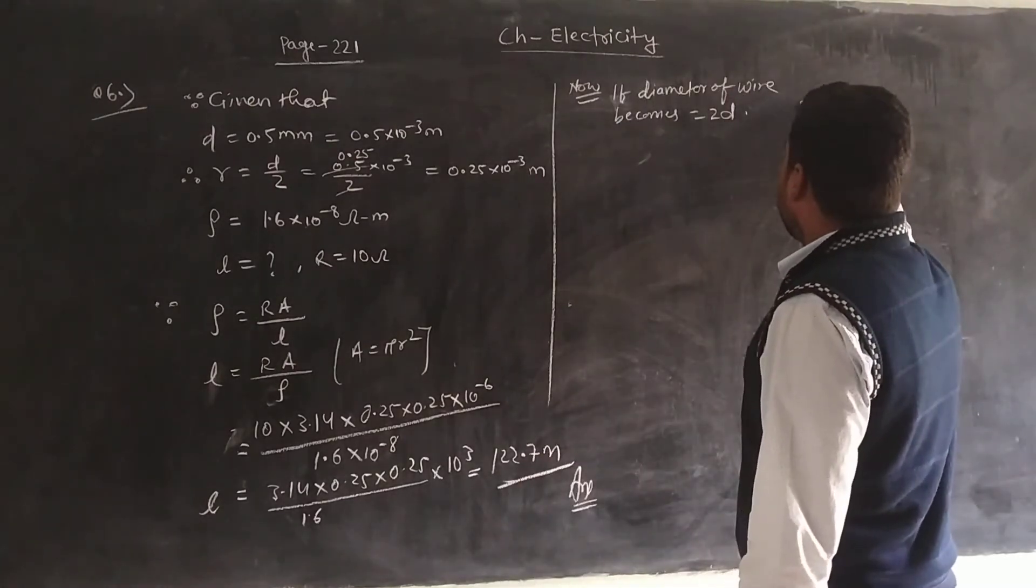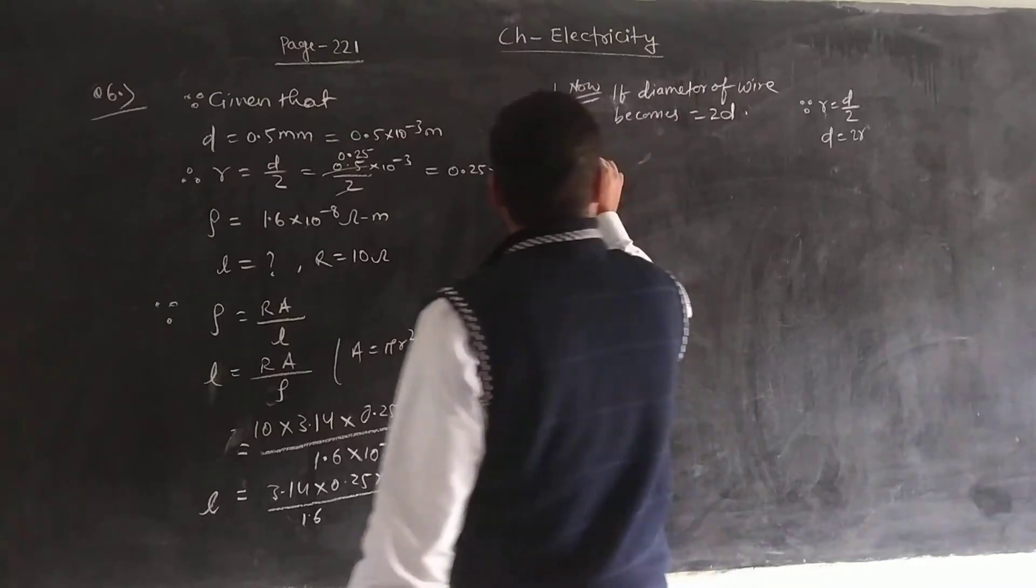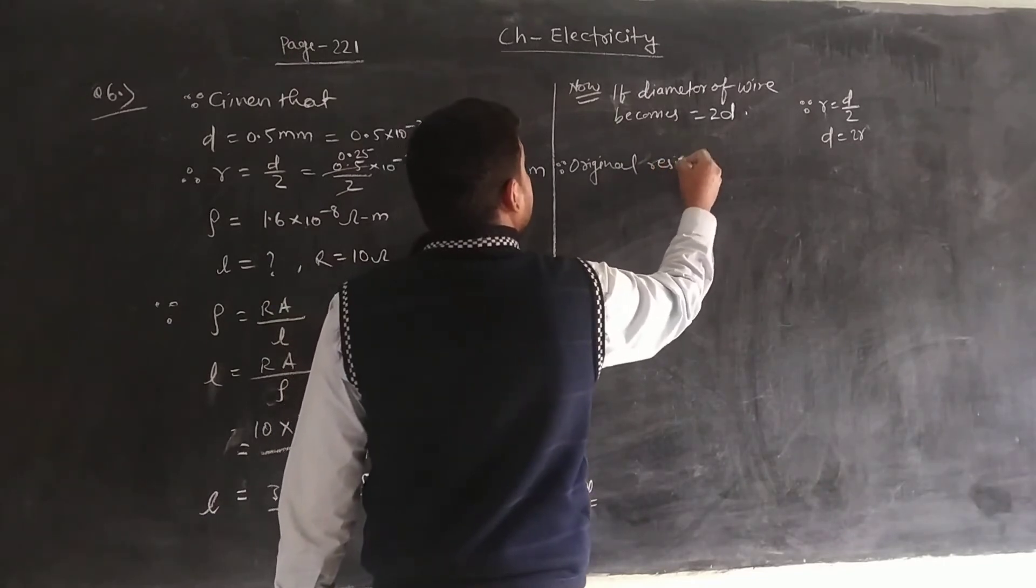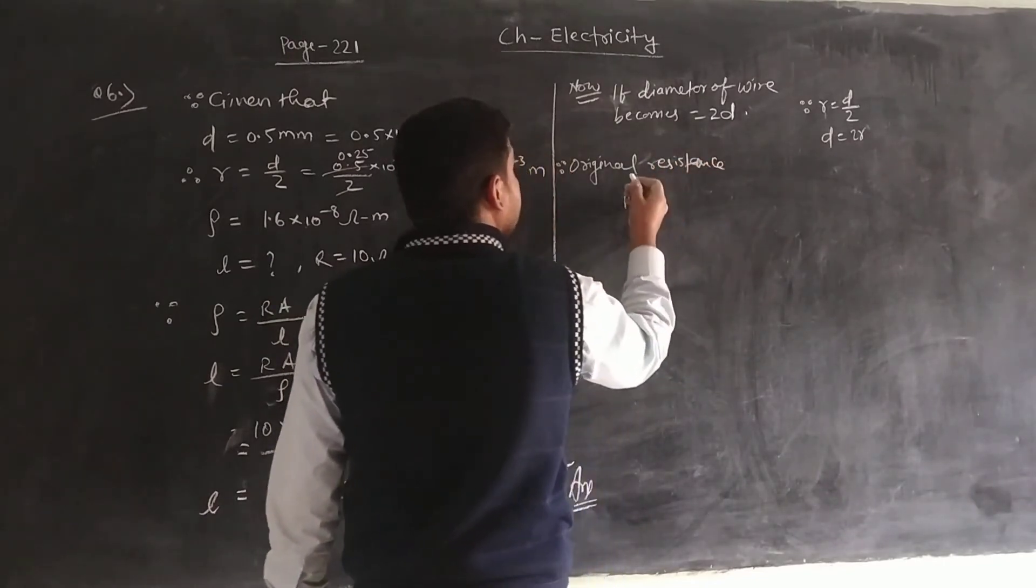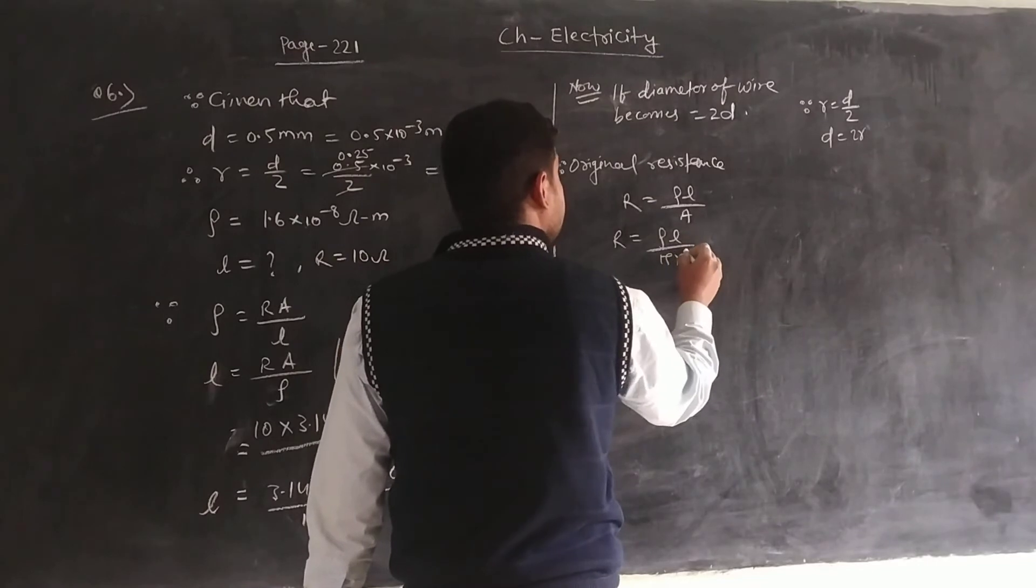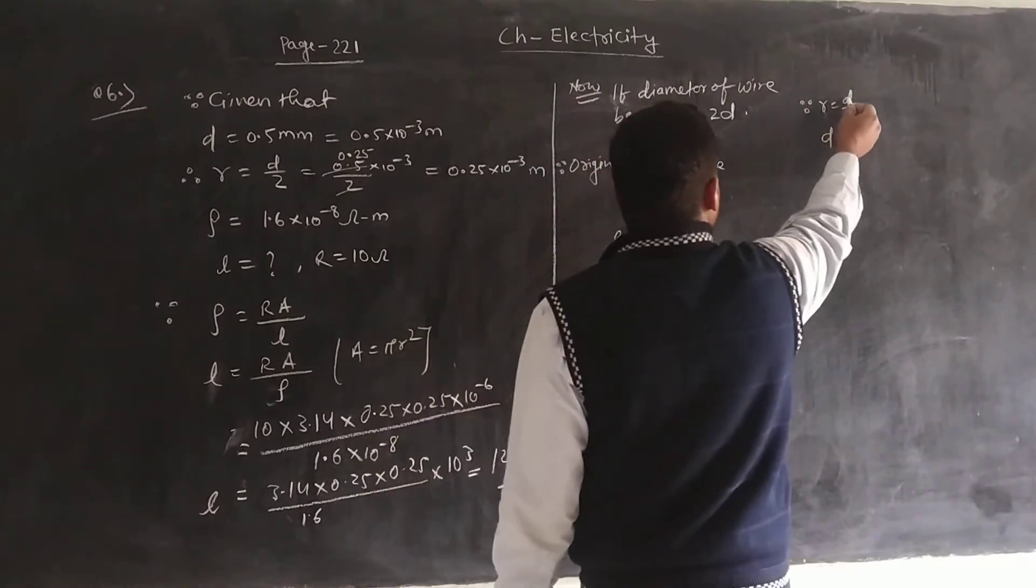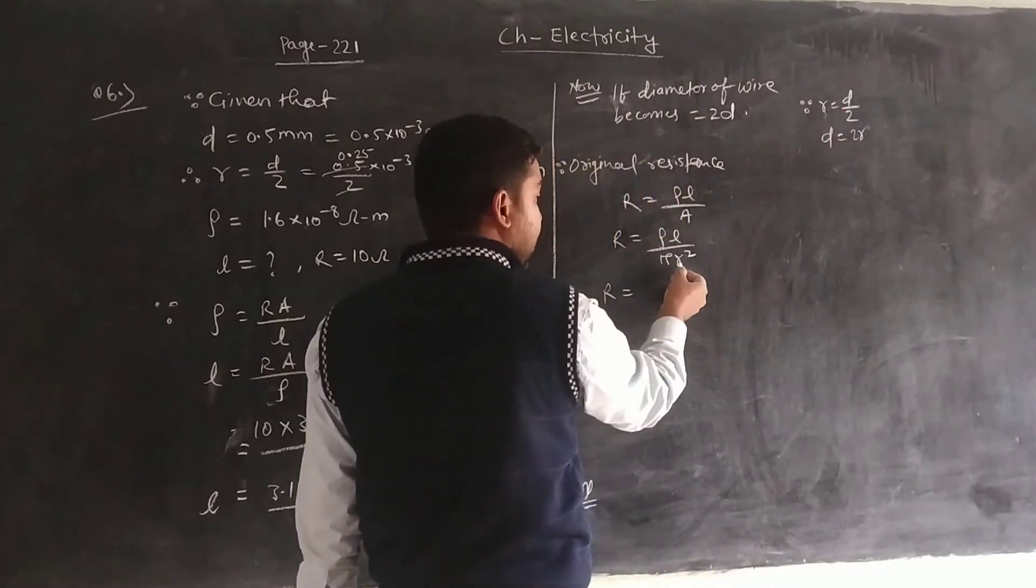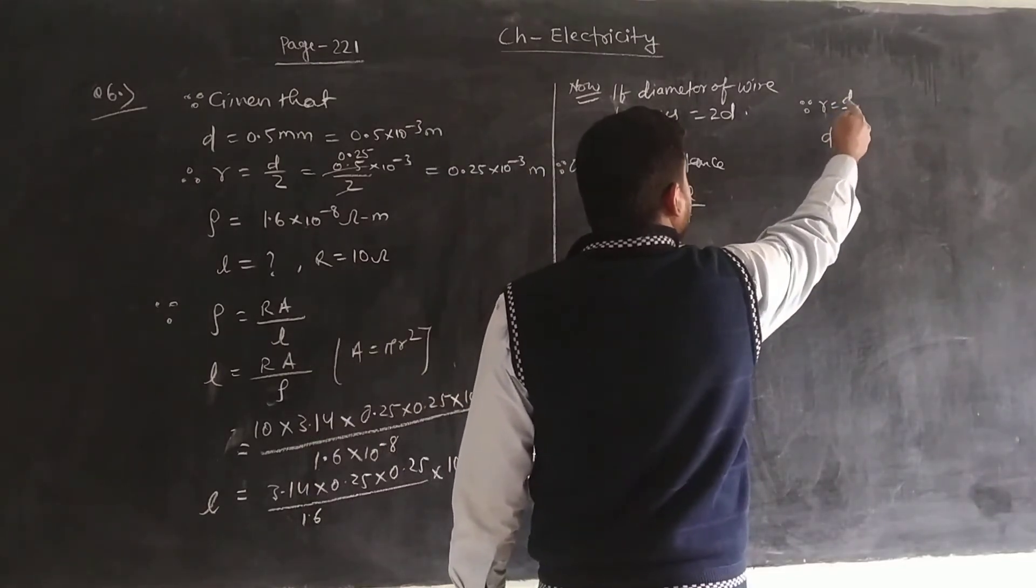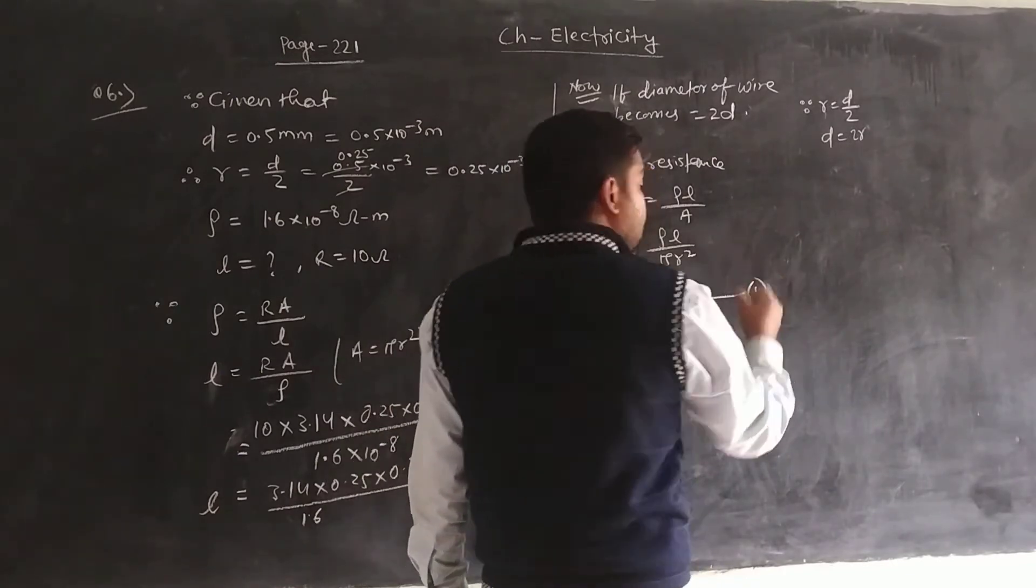Since we know that radius is equal to D by 2, the original resistance is R equal to rho L by A, which is rho L by pi R square. Substituting R equals D by 2, we get rho L by pi times D square by 4, which equals 4 rho L by pi D square.